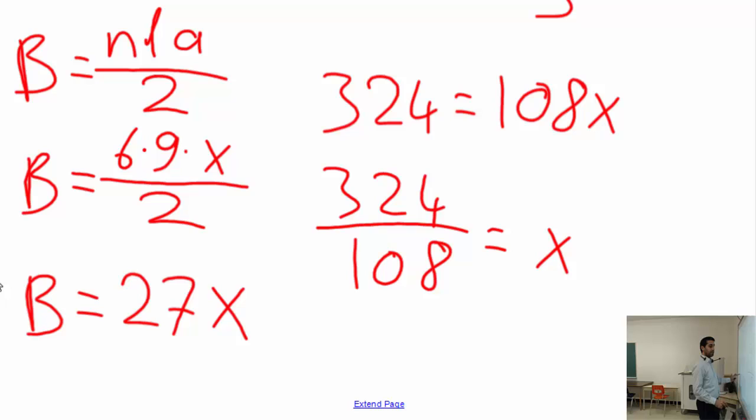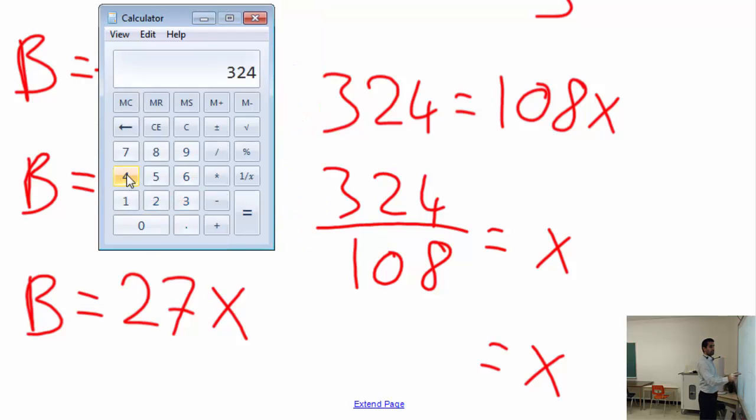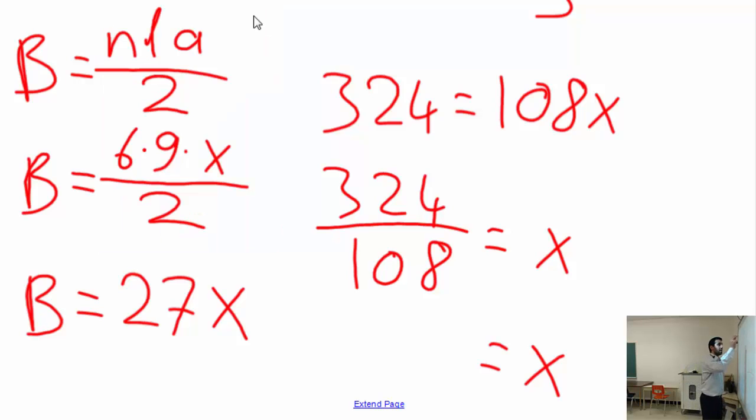This is just a calculation work: 324 divided by 108, which equals 3. Now we know what the apothem is - that is 3 centimeters.